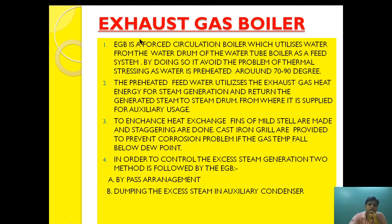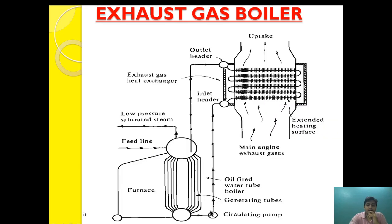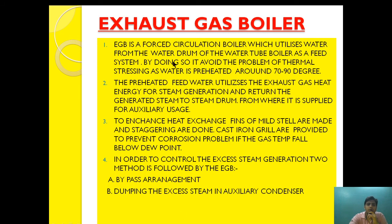The exhaust gas boiler is a forced circulation boiler which utilizes water from the water drum of the water tube boiler. It is forced circulation because the water is pumped to the inlet header — it does not flow naturally. Water is taken from the water drum and pumped to the inlet header, where it absorbs heat from the engine exhaust gas and is converted into steam.